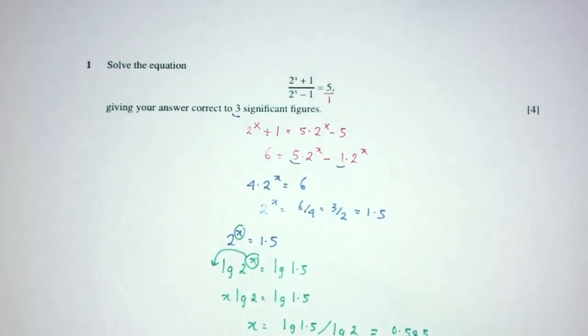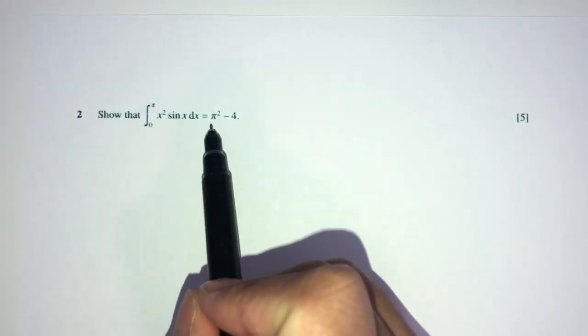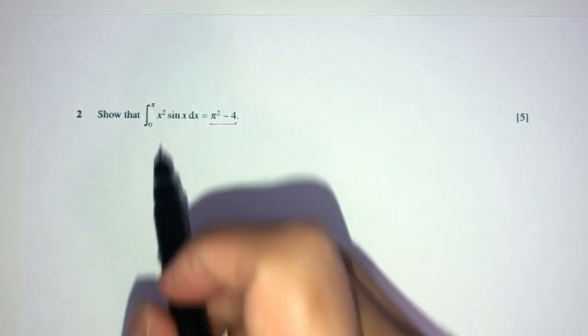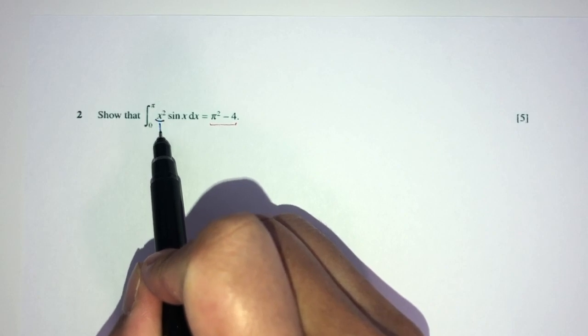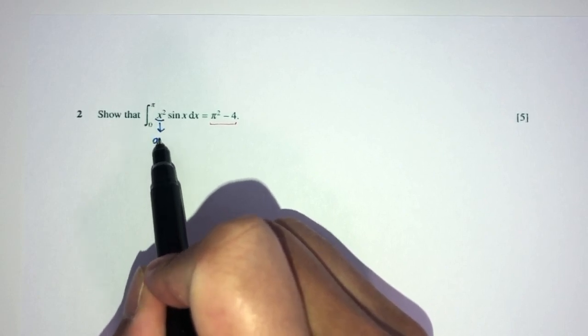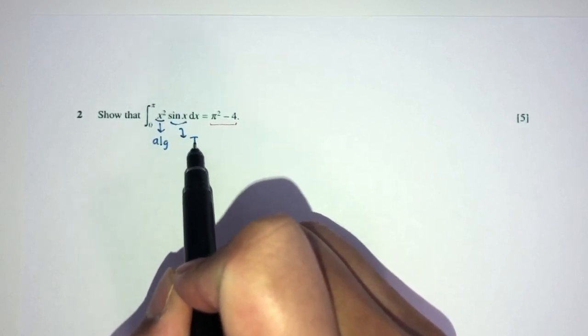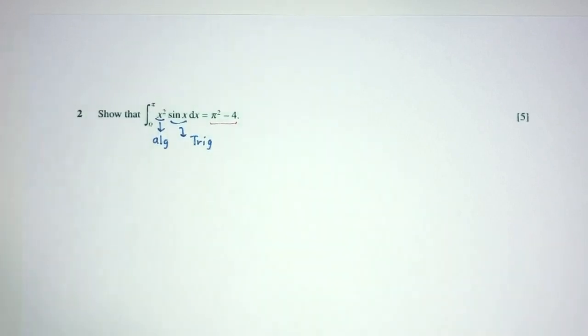And that is your question number one. Now let's move on to question number two. So here we have to do integration. Here we have x squared sine x, and we have to show this integral will become the given result. So what do we observe here? We have algebra and trigonometry.